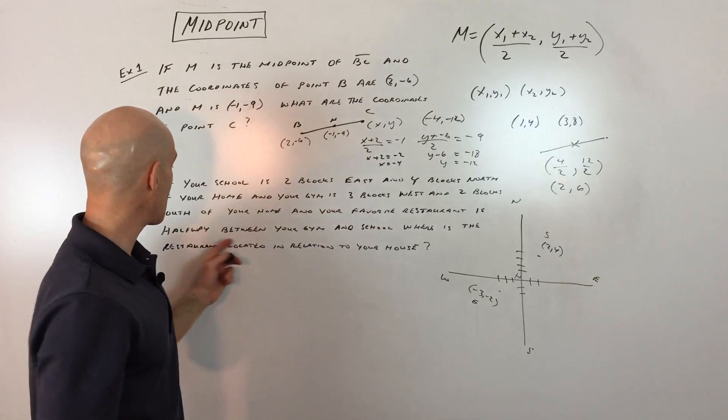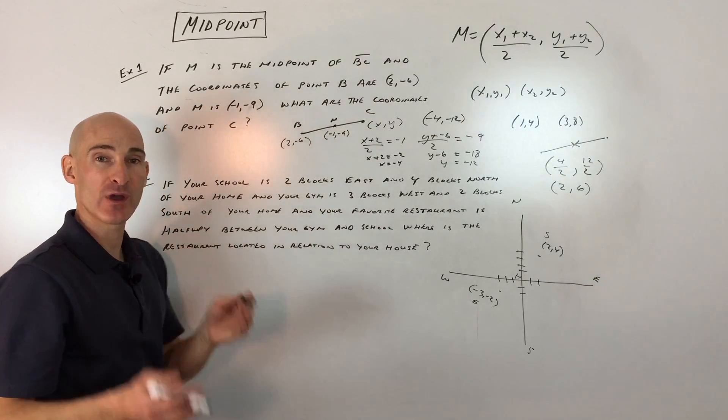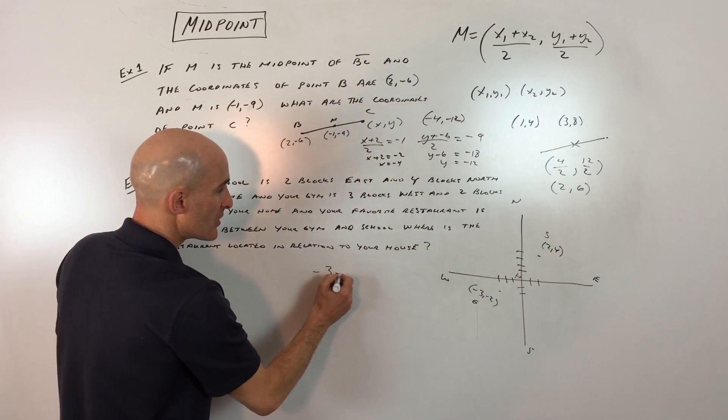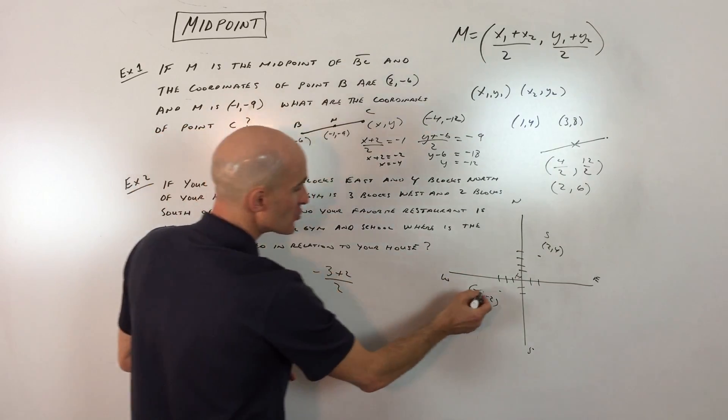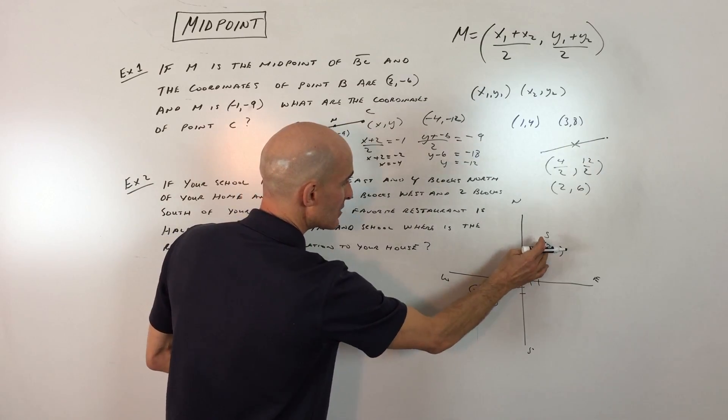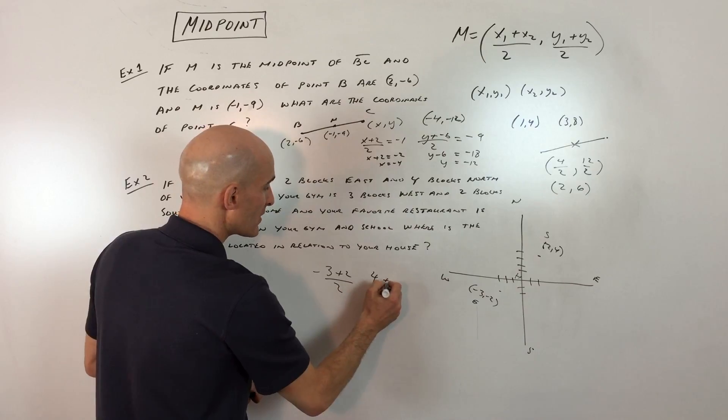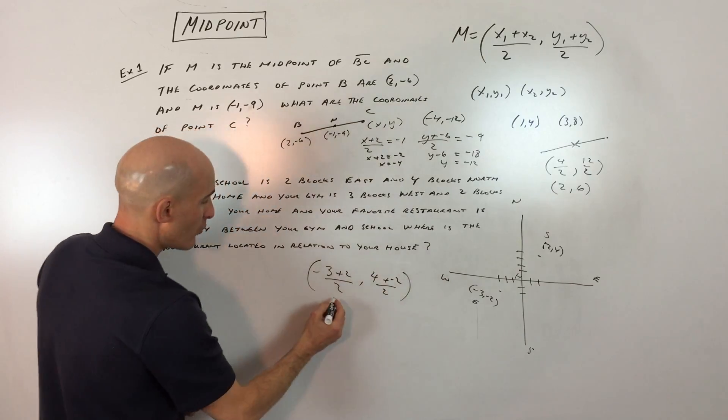When they say halfway, notice they didn't come right out and tell us it was the midpoint, but halfway is midway. So all we're going to do is use our midpoint formula. We're going to add negative 3 plus 2 divided by 2. So I'm adding the x-coordinates together and dividing by 2. Same thing with the y's. We've got 4 plus negative 2 divided by 2, and that's our midpoint.